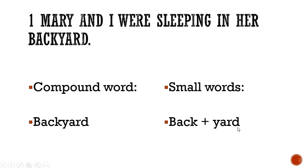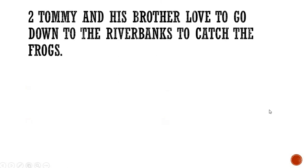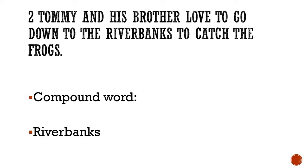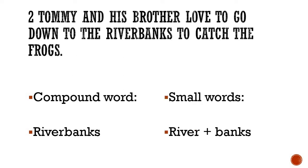Let's see another sentence: 'Tommy and his brother love to go down to the river banks to catch the frogs.' Which word is the compound word — the word formed by the combination of two words? The compound word is 'riverbanks.' Write the answer: riverbanks equals river plus banks. I hope you are writing it properly.